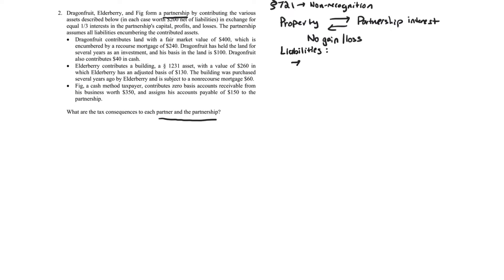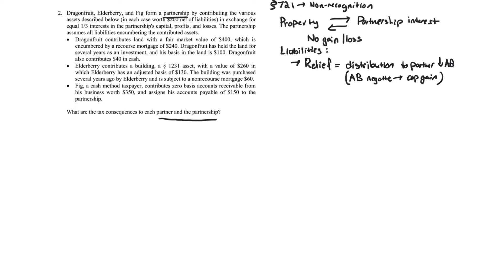The tax law treats it in two steps but considers them together. When a partner has liability relief — where the partnership takes on the liability — that's viewed as a constructive cash distribution to the partner, which reduces the partner's adjusted basis. If the basis goes negative, there will be capital gain, because we can't have negative basis.